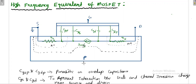Because of the resistance here we get VGS dash at the internal terminal. CGSP and CGDP are parasitic or overlap capacitances. CGS and CGD represent the interaction between the gate and the channel inversion charge near the source and drain — the amount of charge present during channel inversion is represented by CGS and CGD.